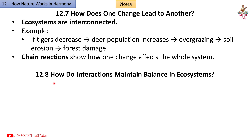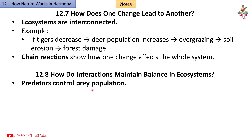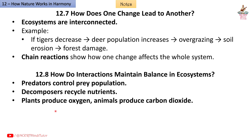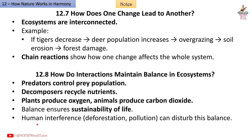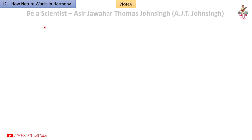12.8: How do interactions maintain balance in ecosystems? Predators control prey population. Decomposers recycle nutrients. Plants produce oxygen; animals produce carbon dioxide. Balance ensures sustainability of life. Human interference — deforestation and pollution — can disturb this balance.